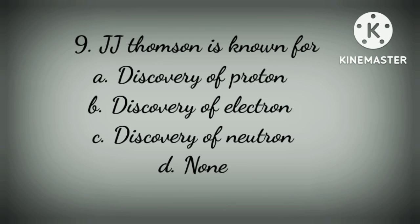Question 9: JJ Thomson is known for — Option A: Discovery of the proton, Option B: Discovery of the electron, Option C: Discovery of the neutron, Option D: None of the above. The correct option is Option B — discovery of the electron.